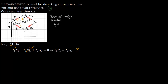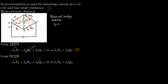Now we focus on the second loop BCDB. Going from B to C, the current I1 is in the same direction as the loop, giving minus I1·P2. Going from C to D, the current is opposite to the loop direction (current flows D to C), so you get plus I2·Q2. Going from D to B, current I_G is in the opposite direction, giving plus I_G·R_G. Under the balanced bridge condition this equals zero, giving us equation two.